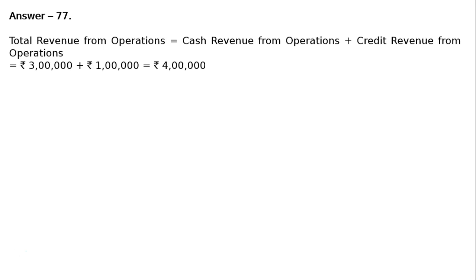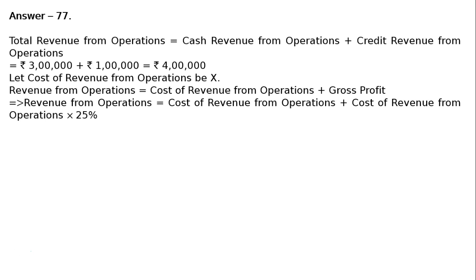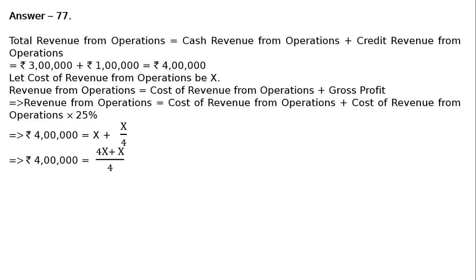Let cost of revenue from operations be x. Revenue from operations equals cost of revenue from operations plus gross profit. Gross profit is 25% on cost of revenue from operations, so revenue from operations equals x plus x/4. Therefore, ₹4 lakhs equals x plus x/4, which simplifies to ₹4 lakhs equals 5x/4.